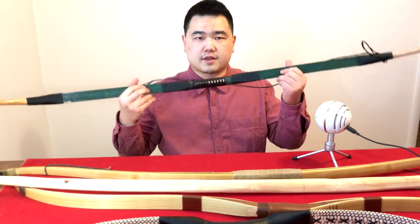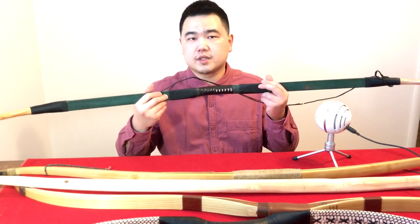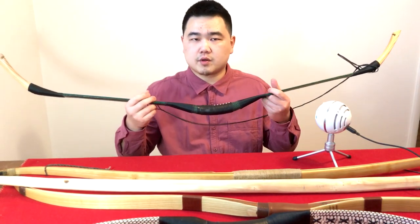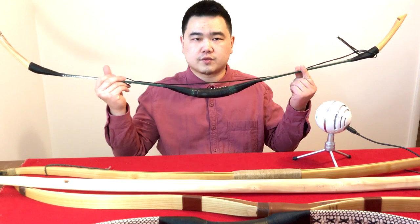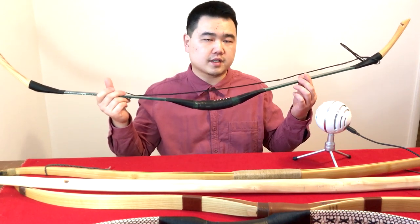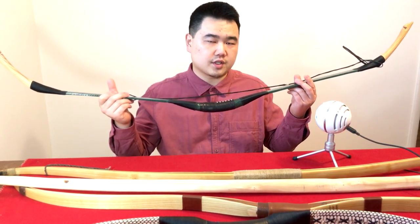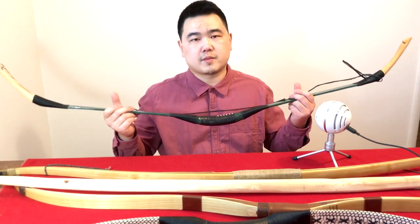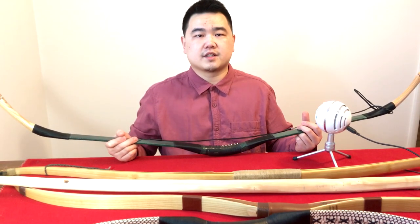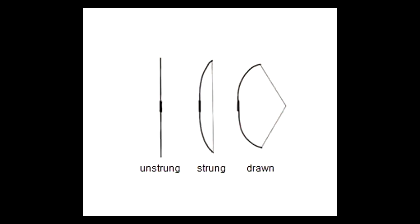Some people might think of the cross section as well, and also the top view. But typically when you think of a bow shape, this is the typical view you would think of — the side view. For my classification, when it comes to a bow there are actually three stages even in its side profile. My classification system uses the un-strung and the strung shapes.